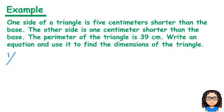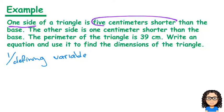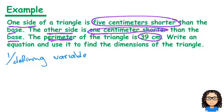Remember, our first step is defining our variable. Before I do that though, I'm going to look through and find some information. We know one side of the triangle is 5cm shorter than the base, another side is 1cm shorter than the base, and the perimeter is 39cm.